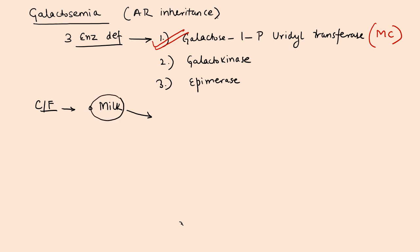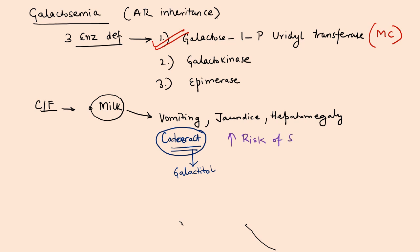Any child consuming milk, whether breast milk or animal milk, consumption of any type of milk will have lactose. Lactose will have galactose. So exposure to galactose will lead to vomiting, jaundice, along with hepatomegaly. Special features asked in exam: these children have cataract due to presence of galactitol. These children have increased risk of sepsis produced by E. coli.